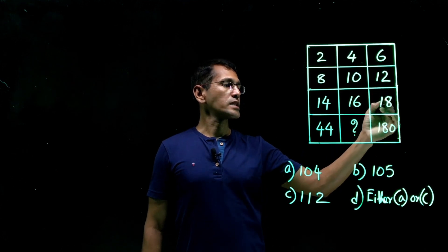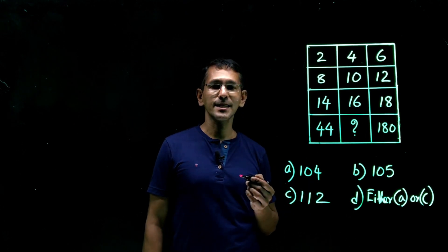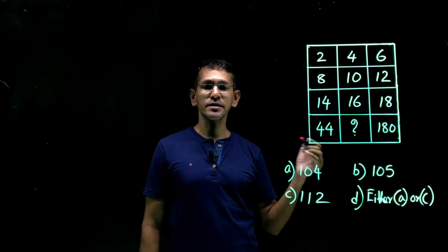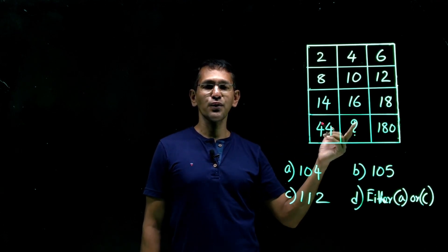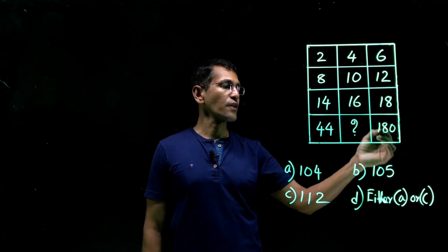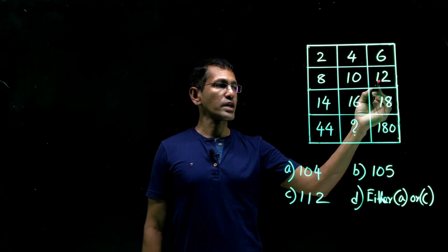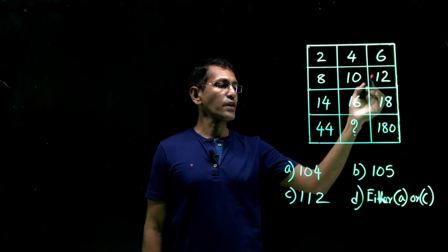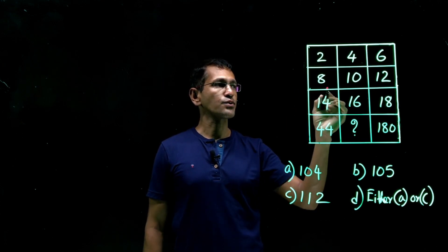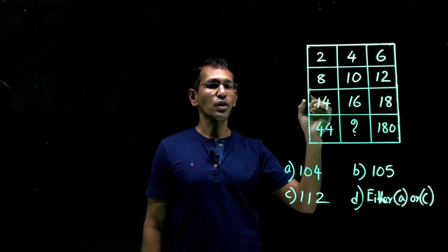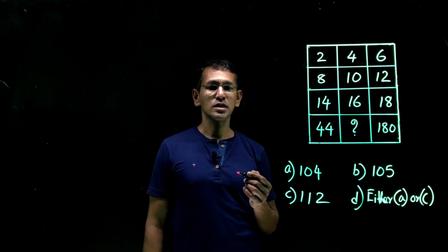How about we check the column-wise. How about like 2, 8 and 14. What's the pattern? 2, 8 plus 2 is 10. And 14 plus 10 is 24. But this is 44. How about this? 6, 12, 18. 18 plus 12 is 30. 30 plus 6 is 36. This is 180. 36 and 180, is there a connection? 36 into 5 is 180. However, 14 plus 8? 22. 22 plus 2? 24. 24 into 5? That's 120. Doesn't work.